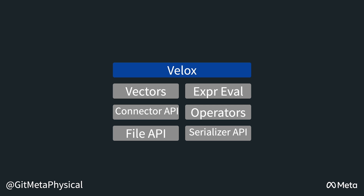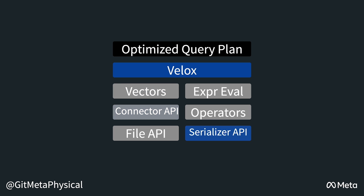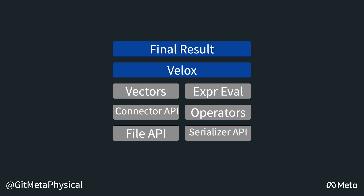Once a data engine's coordinator generates an optimized query plan, the plan is communicated to the assigned worker, and this is when VLOX takes over. Vectors are performed against the data source — in this case either using the connector API for a single source or the serializer API for clusters. Once the needed raw data is acquired, operations and expressions are performed, and the final result is returned to the coordinator.